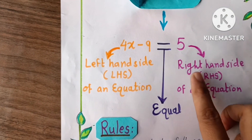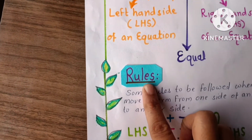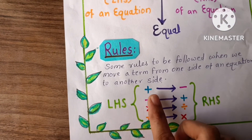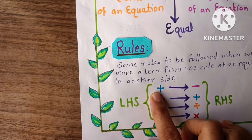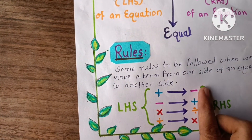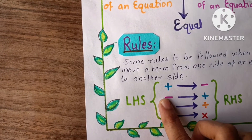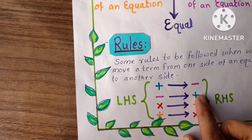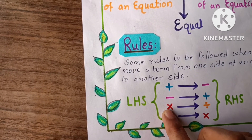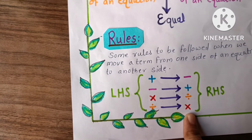RHS means right hand side of an equation. Then rules — there are some rules in an equation. If plus is on one side and it moves to the opposite side, it will convert into minus. Minus will convert into plus when it moves to the opposite side. Multiplication will convert into division and division will convert into multiplication.